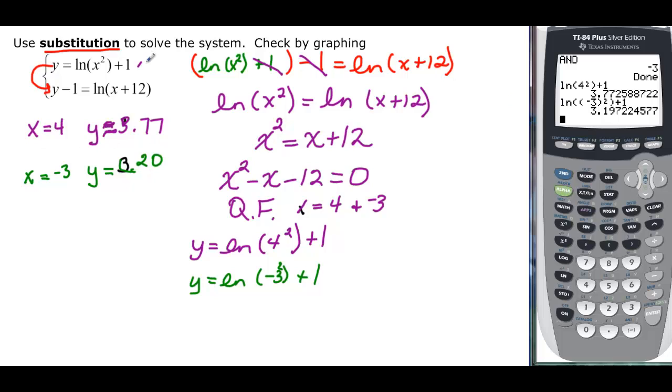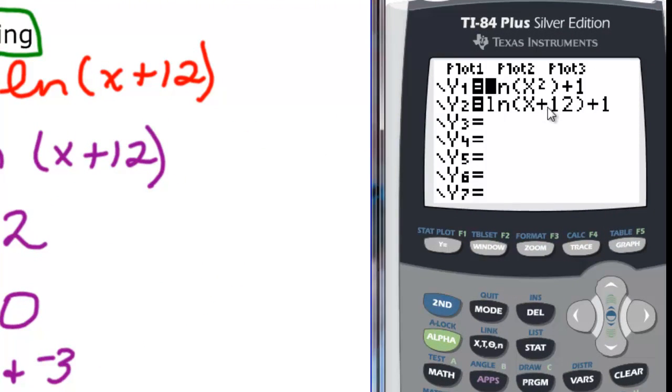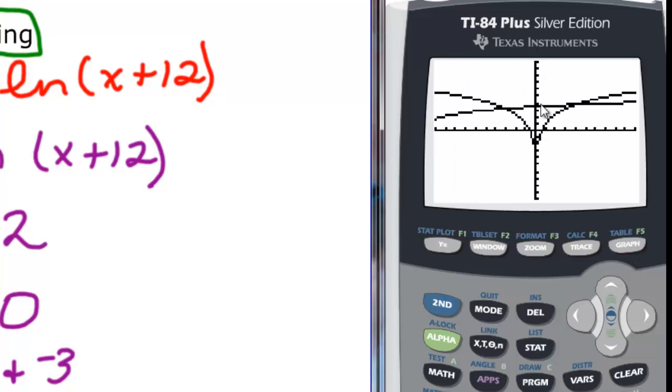So then it does say that we should check by graphing. And I already put these into my calculator. What I did was I said this was y is equal to ln(x) plus 12, but then I add the 1 to the other side. So here's my two equations. ln(x²) + 1. That's the top equation. Then ln(x + 12), and then plus the 1 when I brought it over. And I get this graph. So I can see that I have 2 intersecting points right there.